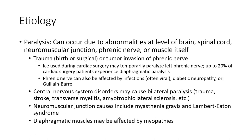Paralysis can occur due to abnormality at the level of the brain, spinal cord, neuromuscular junction, phrenic nerve, and muscle itself. Causes include trauma, central nervous system disorders, neuromuscular junction causes, and diaphragmatic muscle causes.